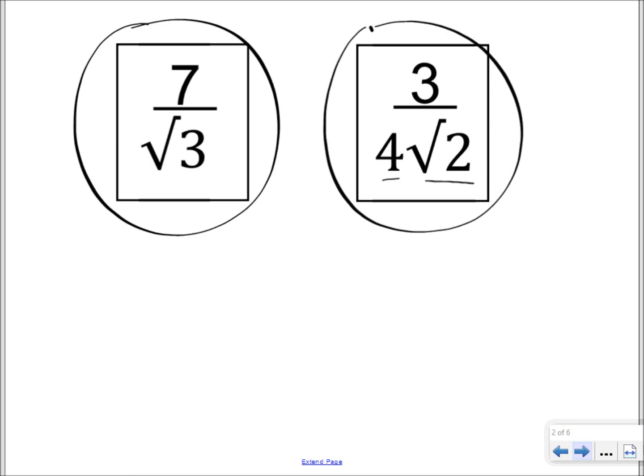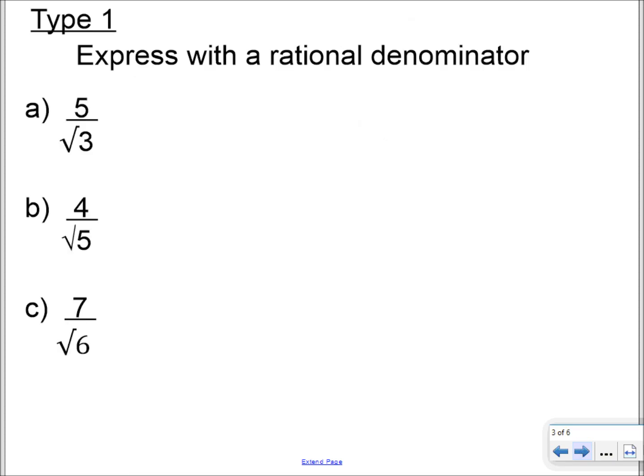Now, the process of rationalizing the denominator is quite straightforward. All you have to do is multiply each of your fractions by something equivalent to 1. What you multiply by is always the denominator divided by itself, because you know that anything divided by itself has a value of 1.